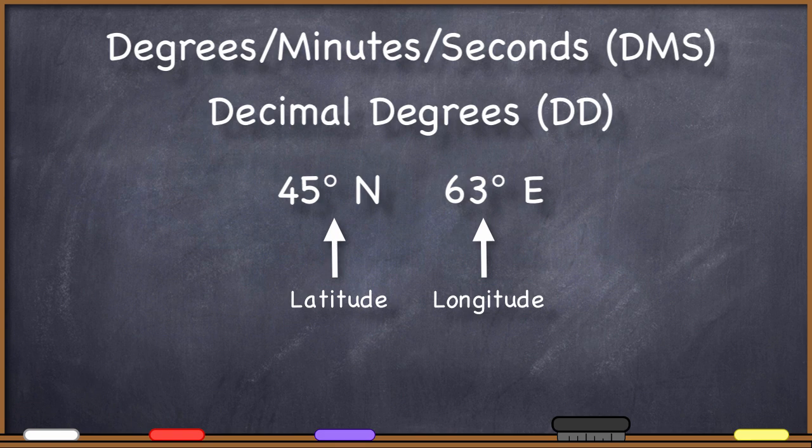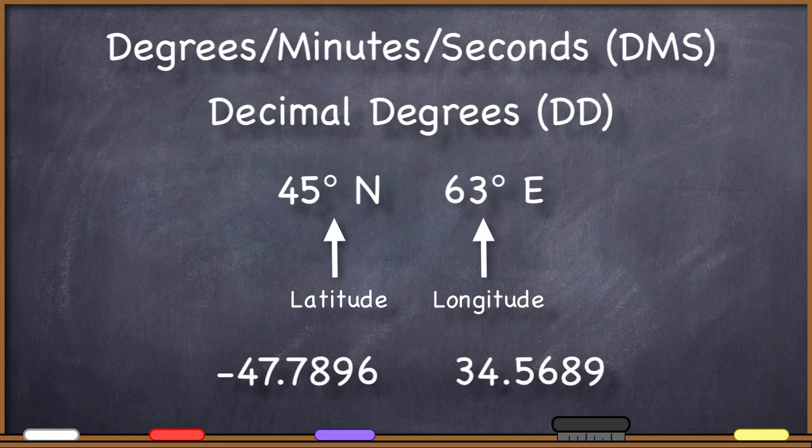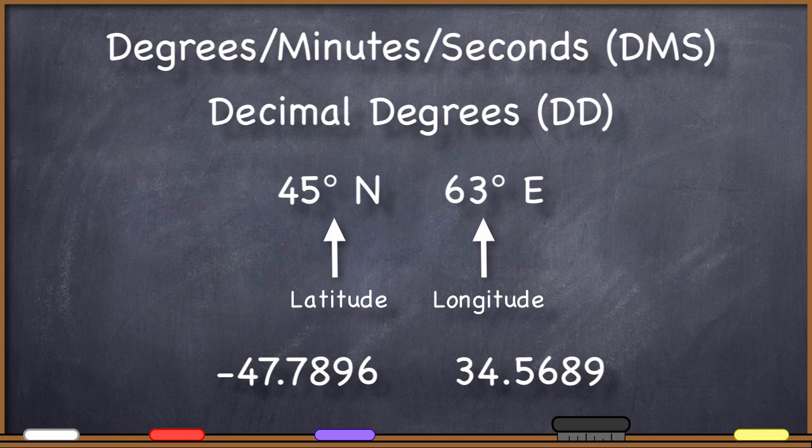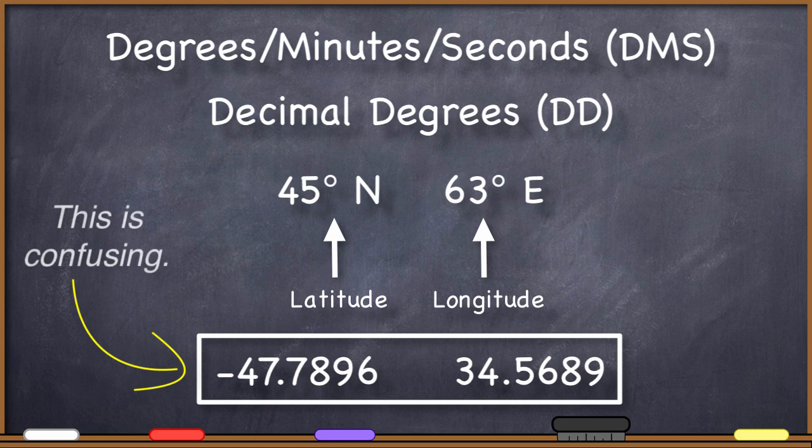Lately, I've even seen instances where people have dropped the compass direction from the coordinates and just use negative and positive numbers, such as negative 47.7896, 34.5689. This is completely confusing because it assumes that people understand the method you are using to report coordinates. That might be what your software package reports, but you need to convert that into a standard format for public consumption. No one knows what software package you are using, and you cannot assume that even if you tell them, the audience knows the way that package reports coordinates, especially if that software package reports them differently from geographic convention.